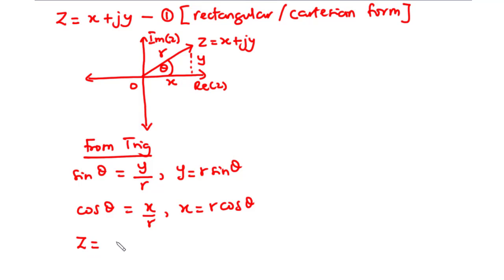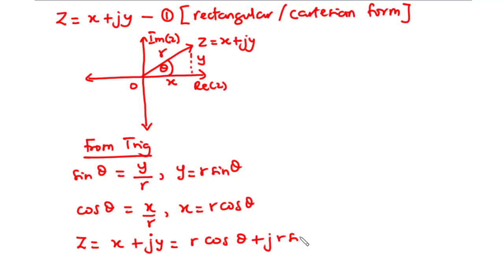From equation 1, z equals x plus jy. Substituting the values of x and y, this becomes r cos theta plus j r sine theta. Since r is common to both terms, we can factor it out, giving z equals r times (cos theta plus j sine theta).